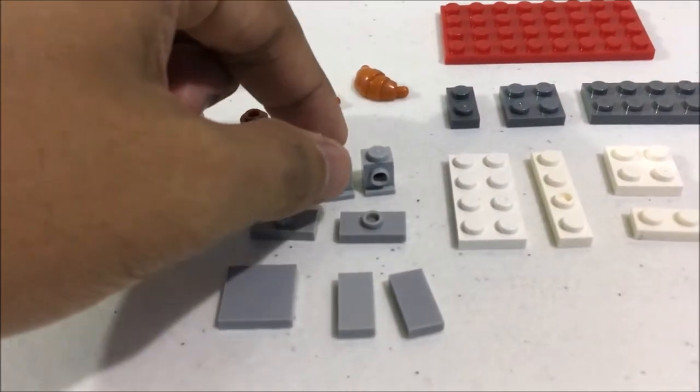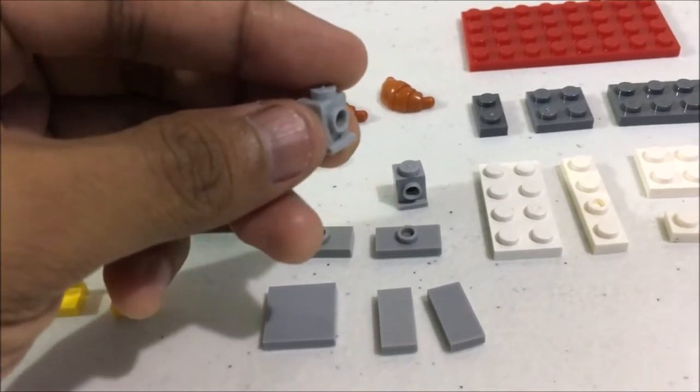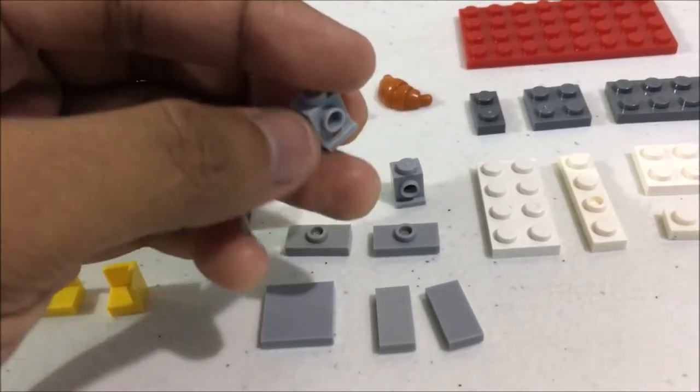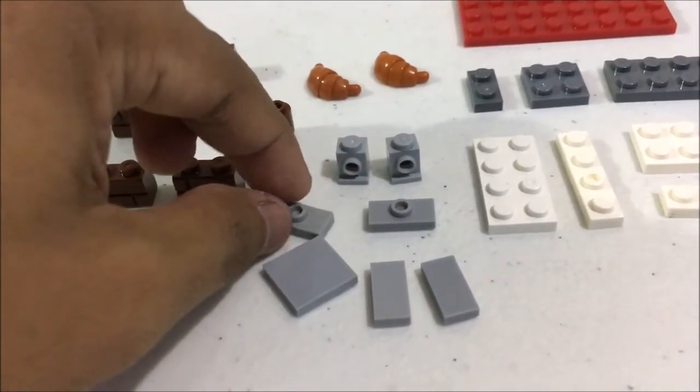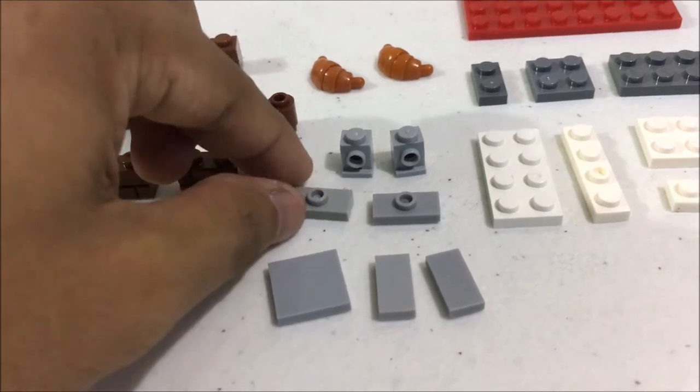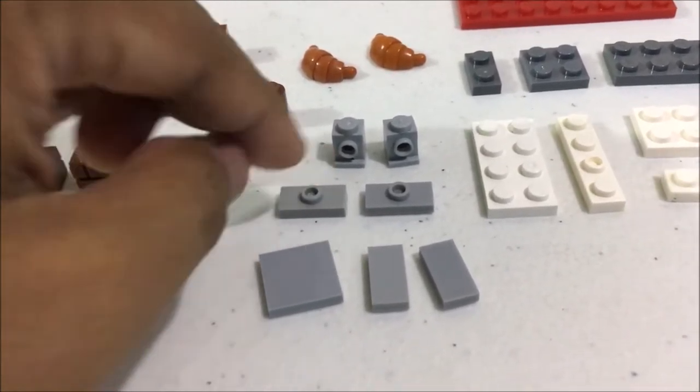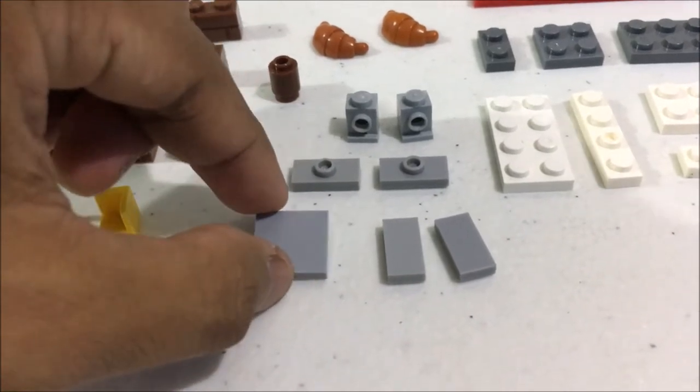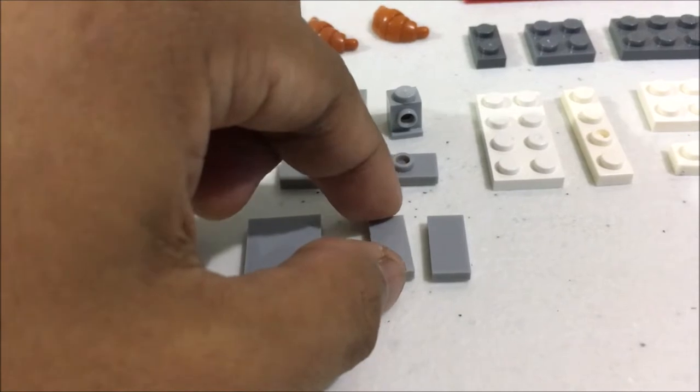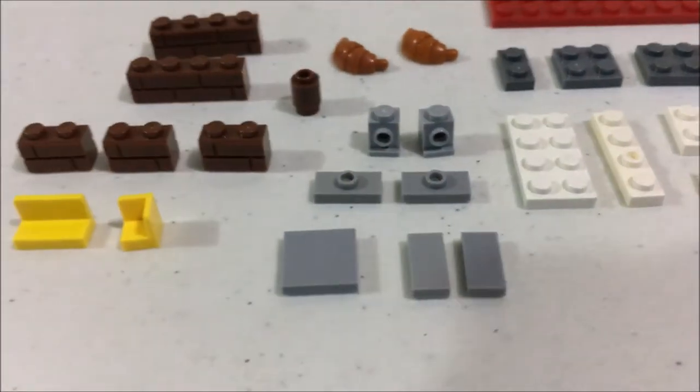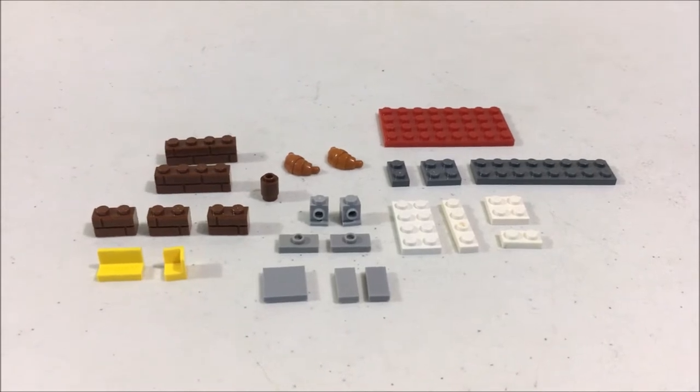You will also need two 1x2 bricks with a stud on the side, one 1x2 tile, one 2x2 tile, and two pieces of plain 1x2 tiles. So this is what we're going to need for the base of the build.